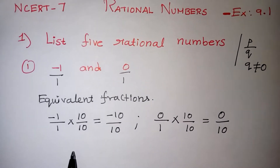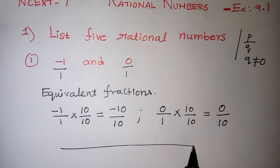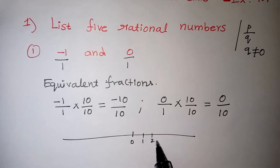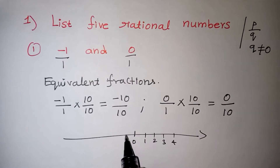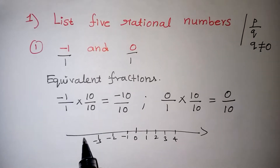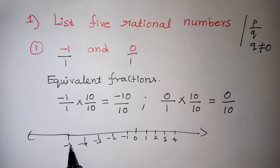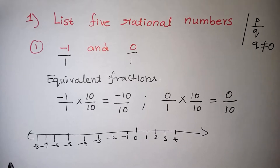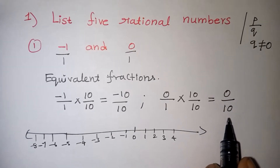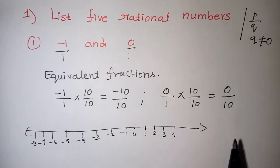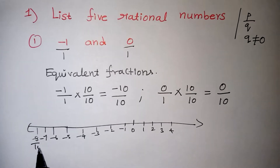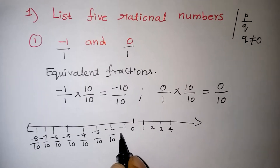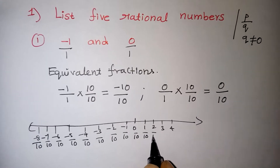Usually the number line will go like this. In your exam you do not need to draw the number line — I am just drawing here for explanation. Normally on the number line, the right-hand side has plus 1, plus 2, plus 3, plus 4, and so on, while the left side has minus 1, minus 2, minus 3, minus 4, minus 5, and so on. Since the denominator is 10, we extend the number line so all terms are written with denominator 10, divided by 10. This is also a correct number line.